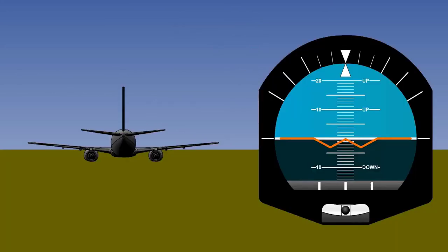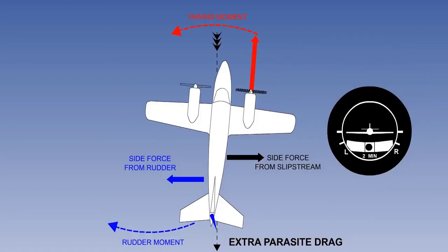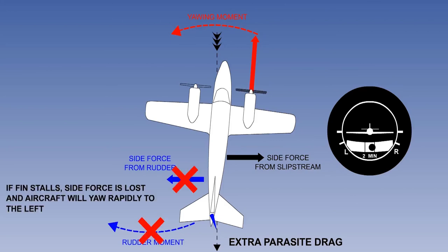The advantage of the wings level method of balancing the forces is the strong horizontal visual and instrument reference available to the pilot. The disadvantages are that extra parasite drag from the side-slip will reduce climb performance, which would be vital when close to the ground, and that there is a possibility of fin stall if the side-slip angle is excessive, which would worsen directional control problems considerably.